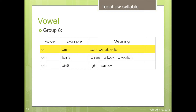Go on to group 8. OI, for example, 'ỏi' is meaning can or be able to. OI, for example, 'thoi' is meaning to see, to look or to watch. OI, for example, 'ỏi' is meaning tight, narrow.